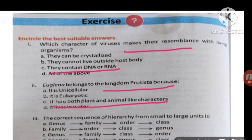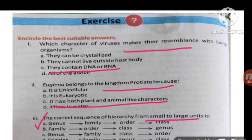MCQ number three: the correct sequence of hierarchy from smaller to larger unit. The correct option is genus, then family, then order, and then class.